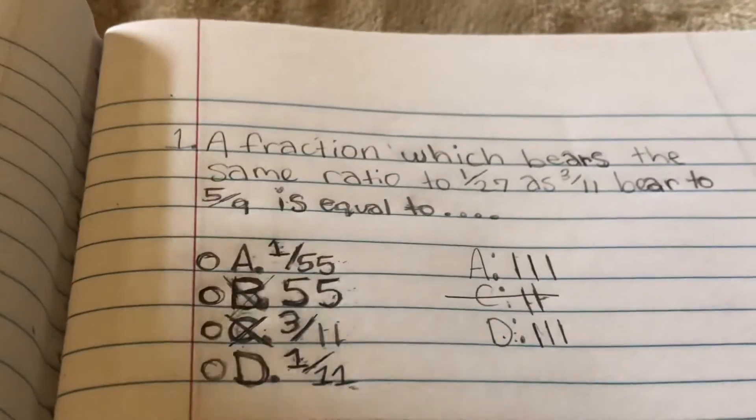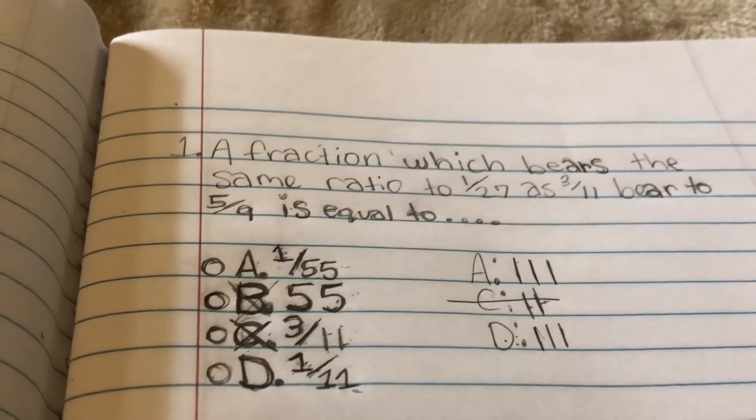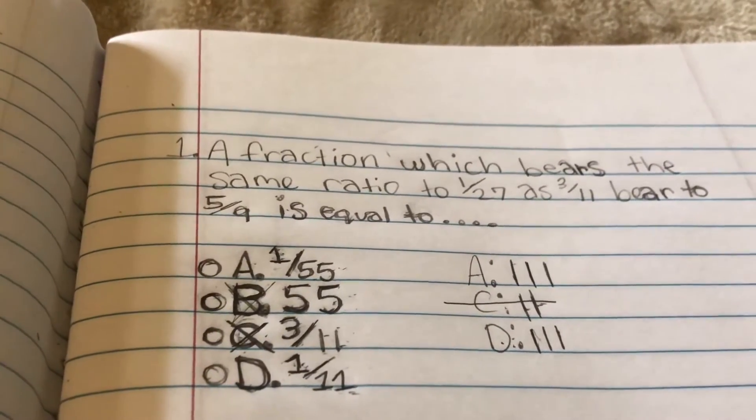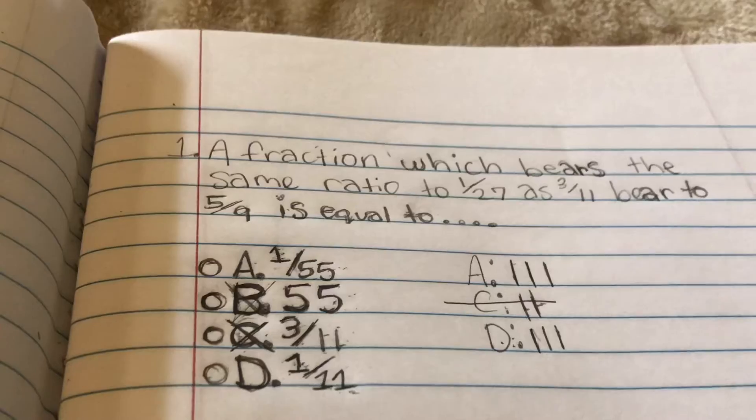When you mark the first answer out, that means the answer is the first answer you marked out, because they want you to think that it's not going to have the same answer in it, but it really is.